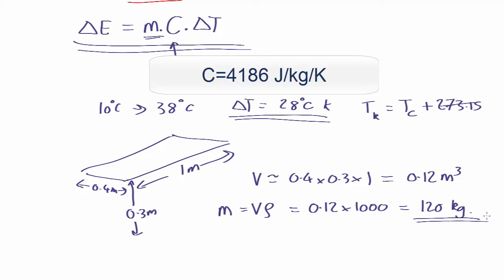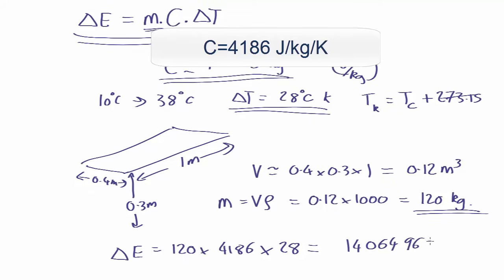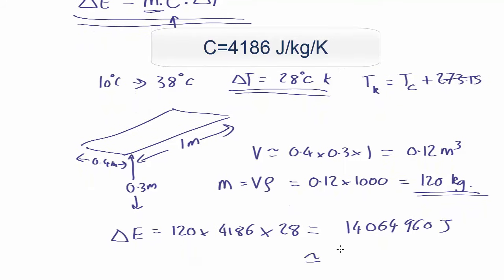Okay, so now how much energy do we need? Let's use that equation. So delta E equals the mass, which is 120, times the specific heat capacity, which is 4186, times the change in temperature, which is 28 Kelvin, which comes out as 14064960 joules, roughly speaking 14 million joules, 14 megajoules, which is a lot of energy. That's why running a hot bath will bump up your energy bill quite a lot.